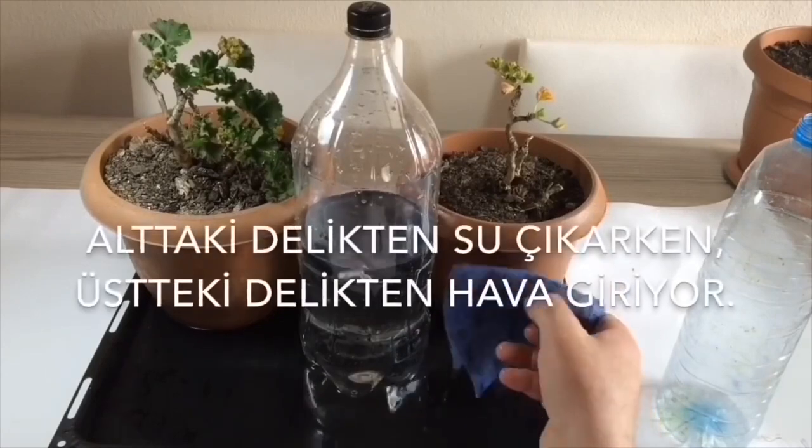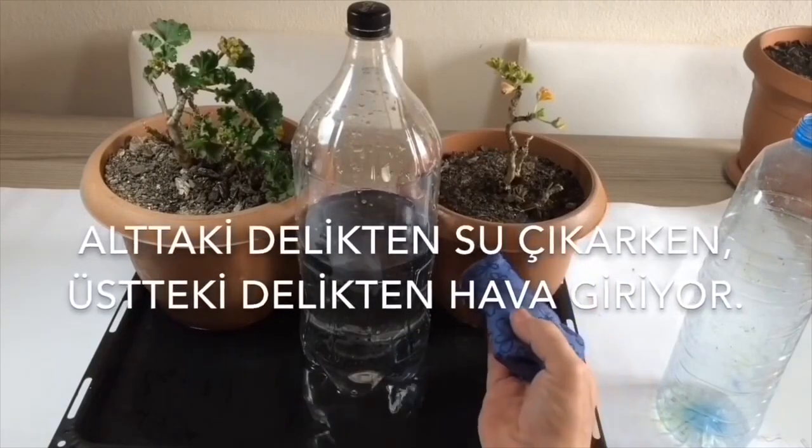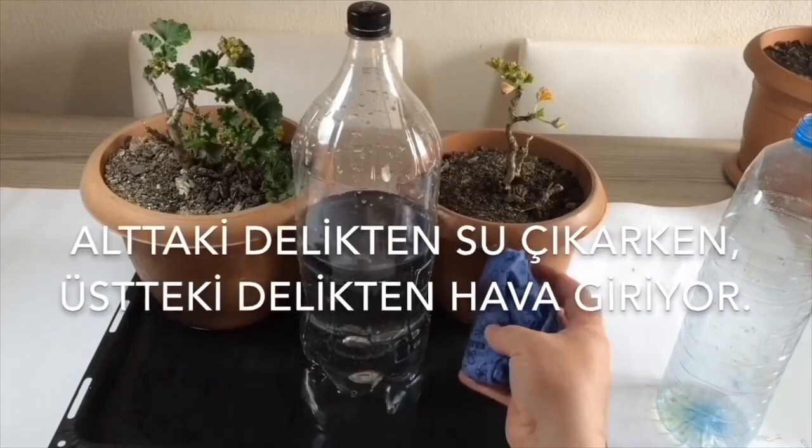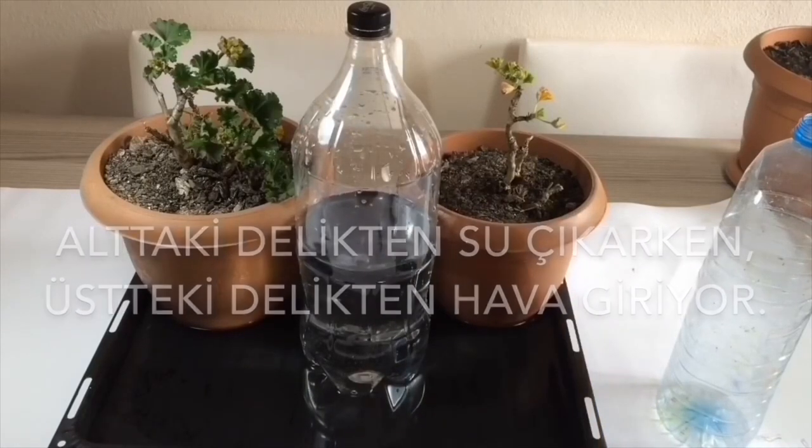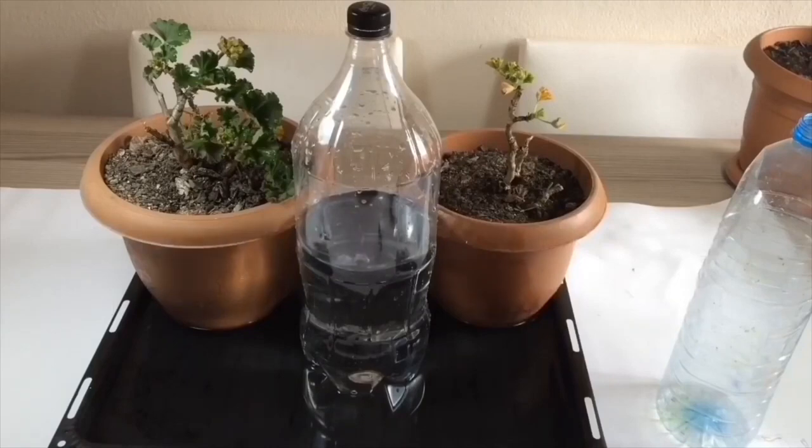When you take a little water from the tray, the water flow starts until the hole is closed because air enters through the hole at the top. As the pots you put in the tray absorbs the water they need, the water in the tray will come back to the level of the hole at the top and the flow will stop again.